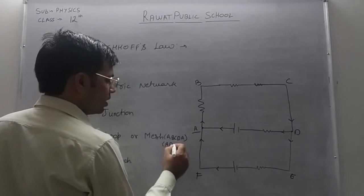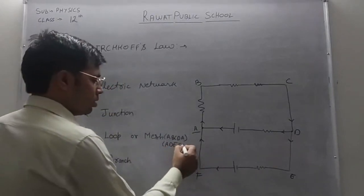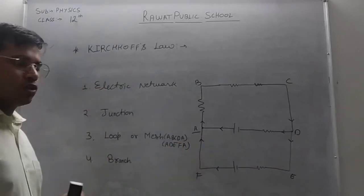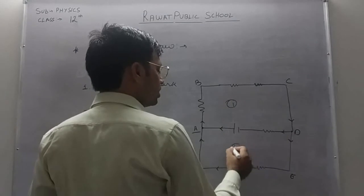So A, D, E, F is another loop. So we are having two loops here. One is this one, second one is this one.